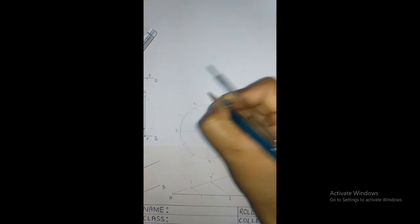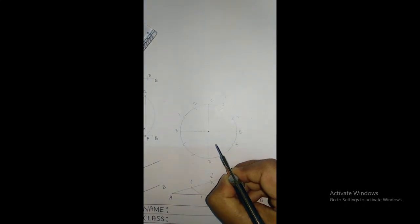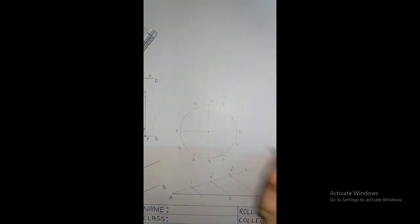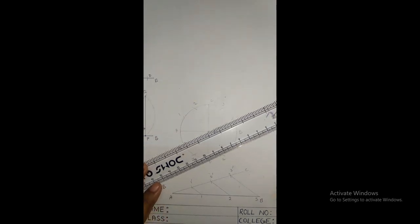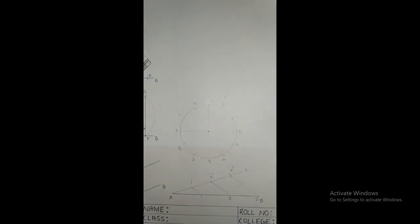this point 2, this is point 3, this is point 4, this is point 5, this is point 6, this is point 7, this is point 8. Now they are equally distributed. If you draw this line from here to here, you can see that all are equally distributed. So this is the way to divide a given circle into 12 equal parts.